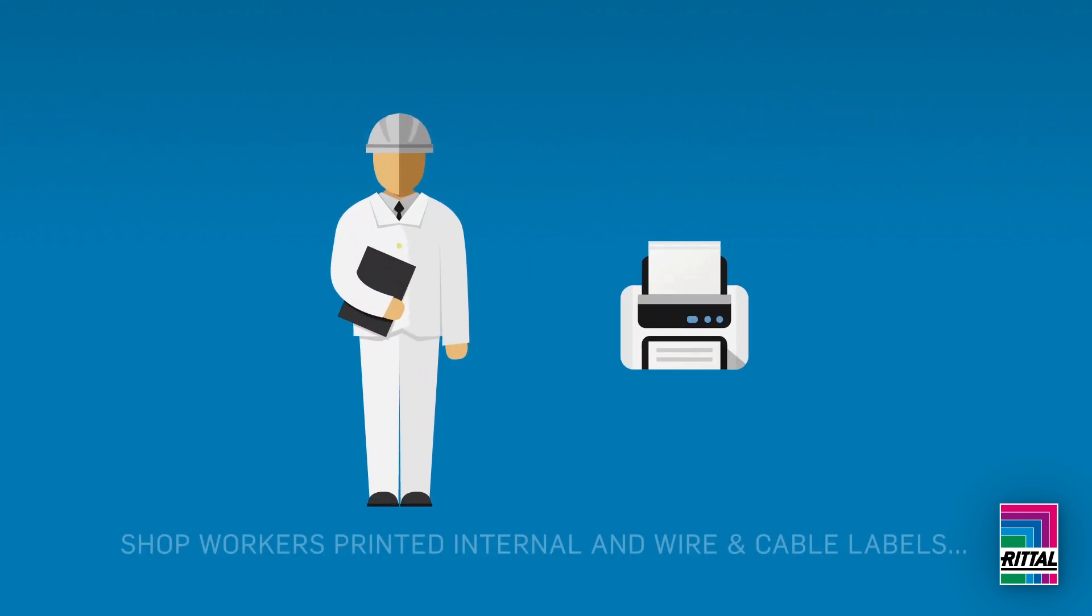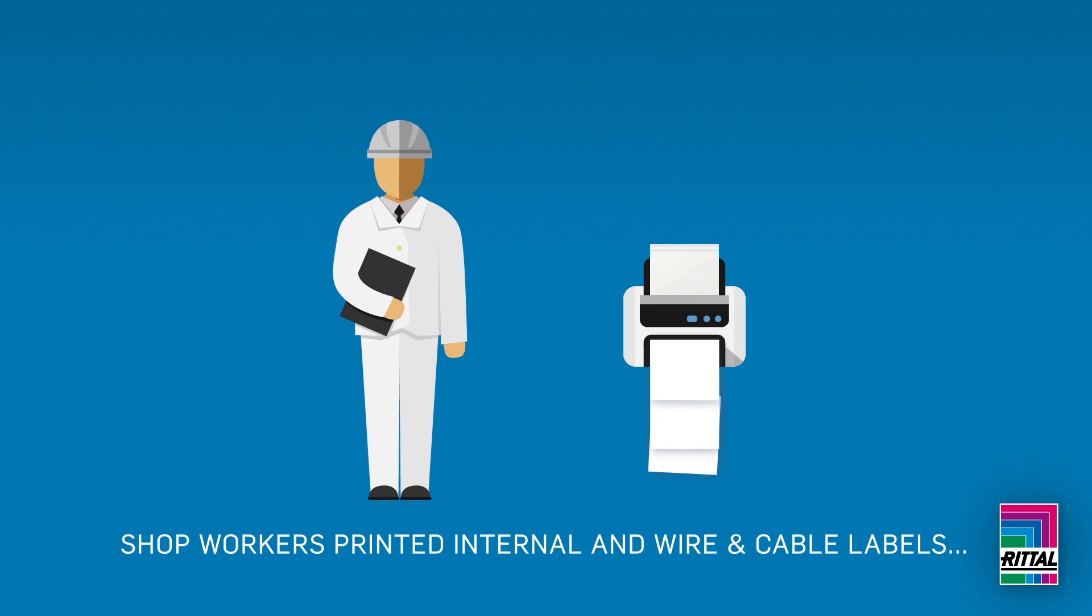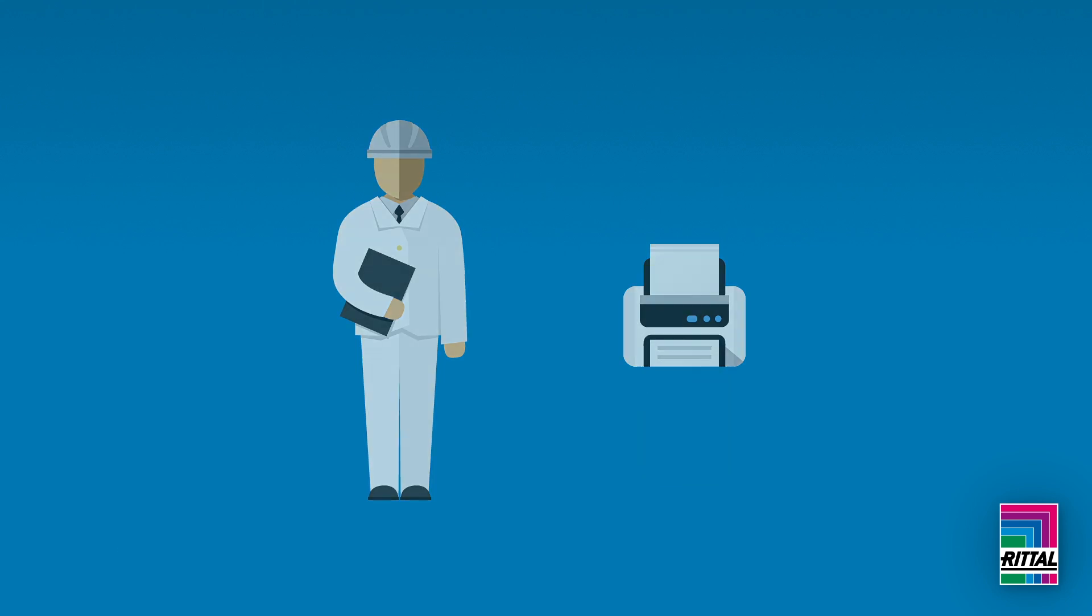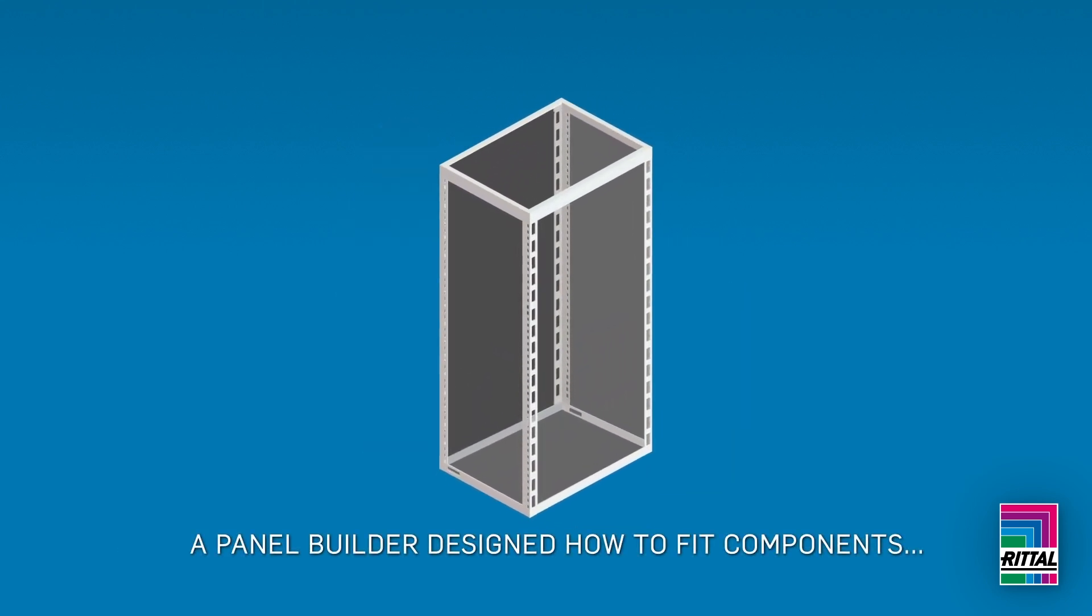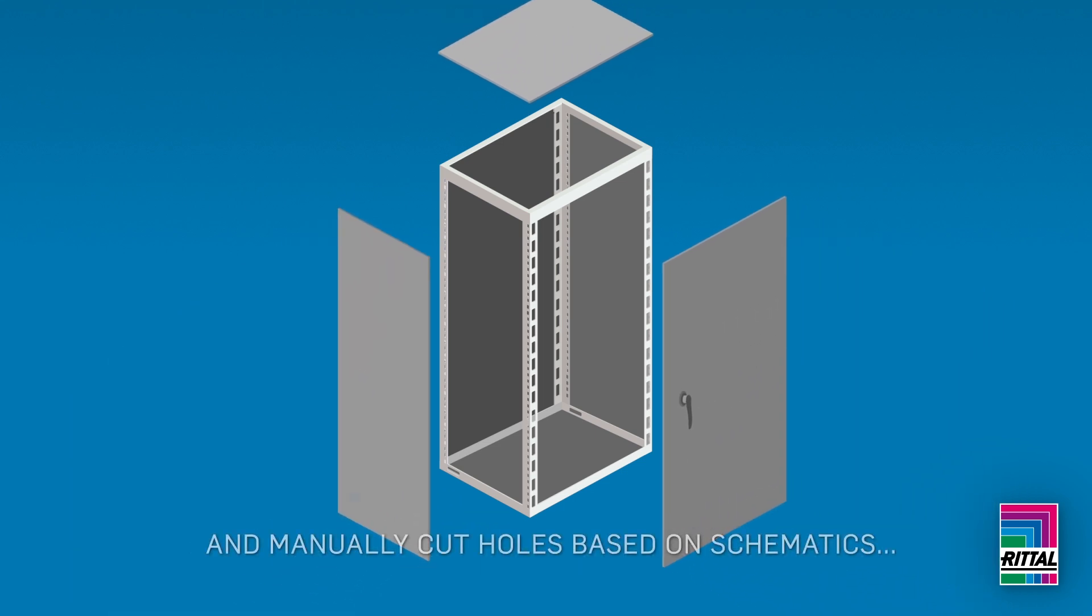Shop workers printed all necessary internal and wire and cable labels according to end customer specs. A panel builder or electrician identified the devices required, designed how to fit components in the smallest enclosure possible, and manually cut holes based on schematics.